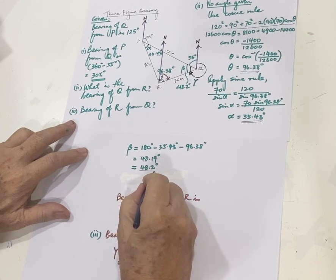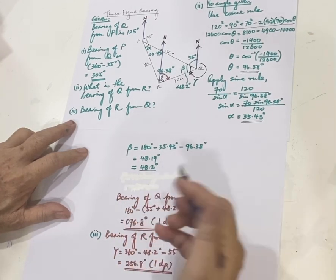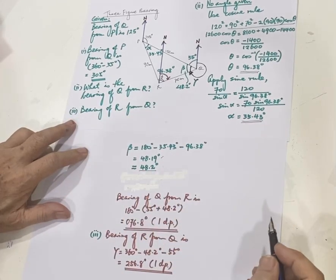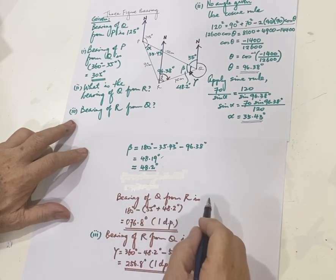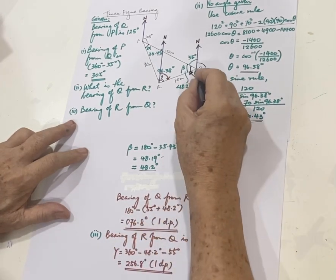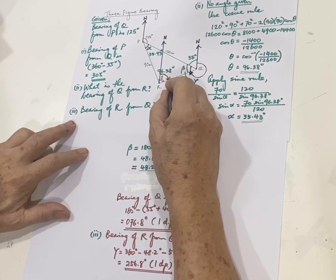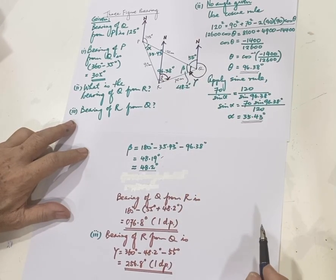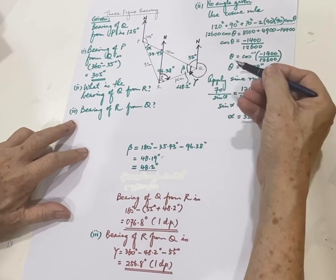I just keep beta to one decimal place because that is the final answer. No need to keep more. In fact, I have 48.19 there, but it's not very useful. So bearing of Q from R, look here. Bearing of Q from R, you stop at R. Three-figure bearing means you want this angle. You want this angle.